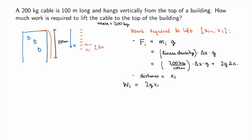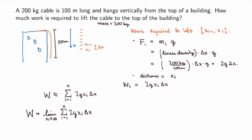To approximate the total work I add up the work for all n segments: the sum from i equals 1 to n of 2g·xᵢ·delta x. To get a true calculation I take the limit as the number of segments goes to infinity, which gives a definite integral. This is just the definite integral of 2g·x dx. The cable runs from x equals 0 to x equals 100, so I integrate between 0 and 100.